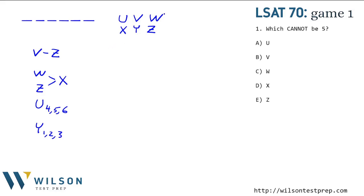LSAT 70, game one. We have six bands: U, V, W, X, Y, and Z. We have six spots at the concert. We have four conditions. We need to put these in order. So this is a straightforward ordering problem. Let's look at the conditions.